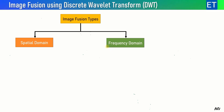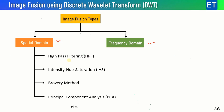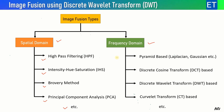There are two approaches for image fusion: spatial domain and frequency domain. In the spatial domain we have high pass filtering, intensity-hue-saturation, the Brovey method, and principal component analysis based methods. In the frequency domain we have pyramid-based approaches utilizing Laplacian and Gaussian, discrete cosine transform, discrete wavelet transform, and curvelets, among others. For this video I'm going to discuss the discrete wavelet transform based approach.